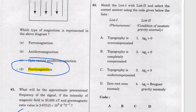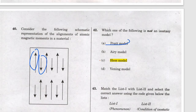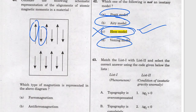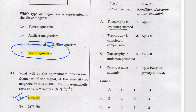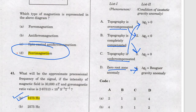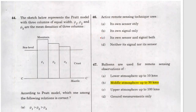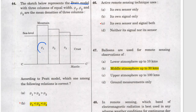Question 41 answer is a. Question 42: which of the following is not an isostasy model? Pratt isostasy is a model, Airy is also a model, Venning model also, but Hess is not — answer is Hess model. Question 43 on isostasy compensation: completely compensated gives zero free-air anomaly. If there is no root it is a Bouguer anomaly. If under-compensated, gravity g is positive, so the Bouguer anomaly is negative — answer is d. In the basic Pratt model, rho1 is less than rho2, which is less than rho3.